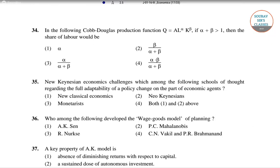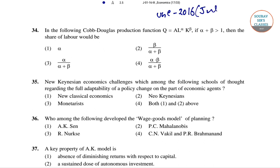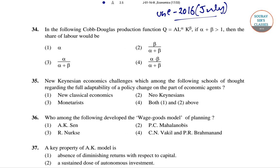Hello students, welcome to Shaudup Surs Classes. We are solving UGC NET 2016 July paper. In today's video we'll go to question number 34 from paper number 3. In question number 34 it is given: the Cobb-Douglas production function which is given by Q equals to A into L to the power alpha and K to the power beta.